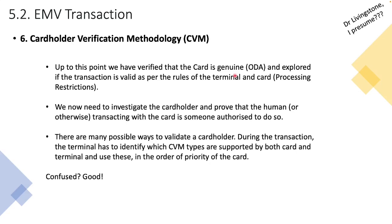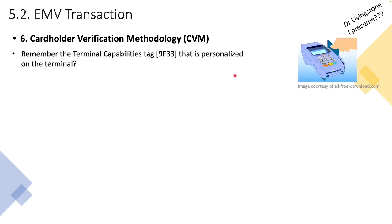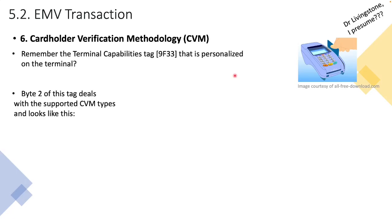There are many ways to validate the cardholder. During the transaction, the terminal has to identify which CVM types are supported by both the card and terminal, and to use these in the order of priority of the card. You'll remember that during the acquirer section, when we spoke about parameters stored on the terminal, there was a tag called terminal capabilities, 9F33. Byte two of terminal capabilities deals with the supported CVM types — what CVM types does this terminal support?